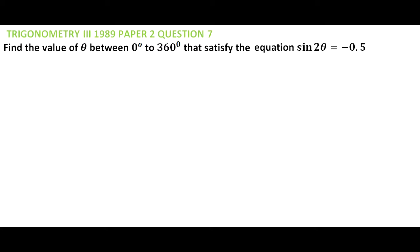This question appeared in 1989 KCSE paper 2 question number 7. You are told to find the value of theta between 0 degrees to 360 degrees that satisfies the equation sin 2θ = -0.5.